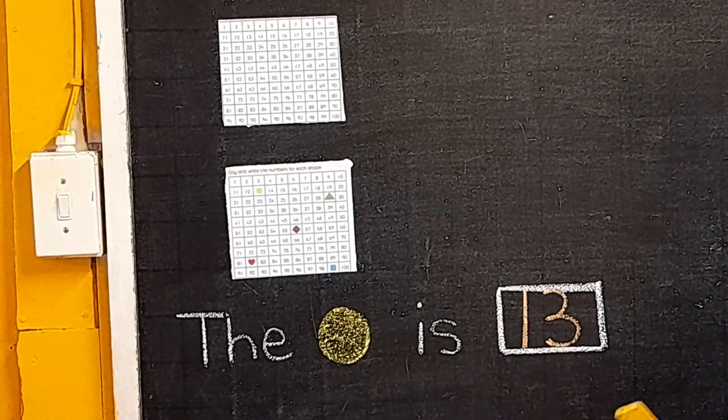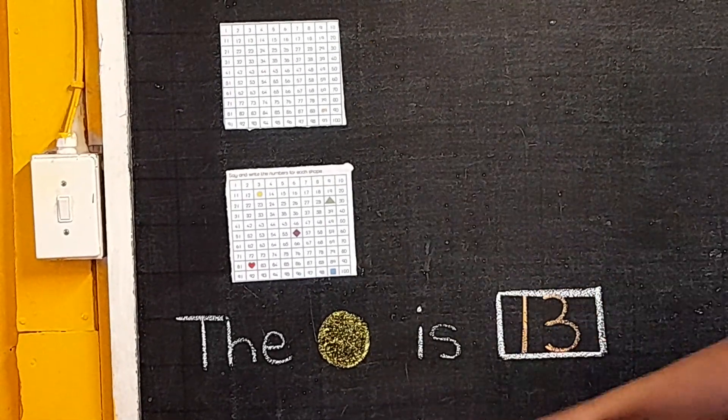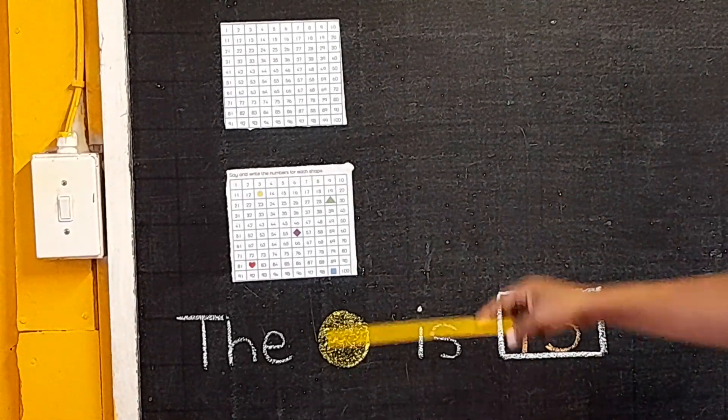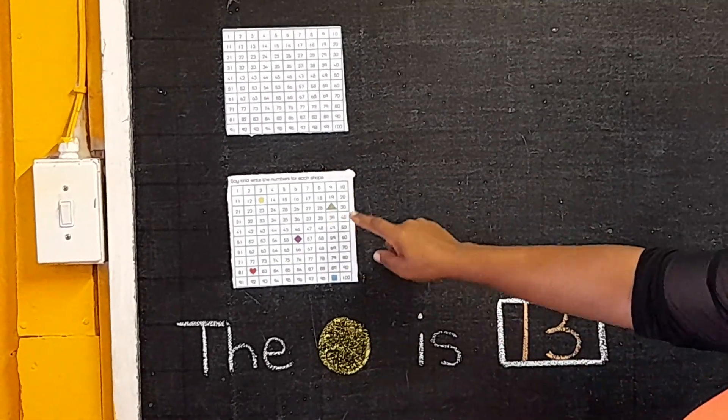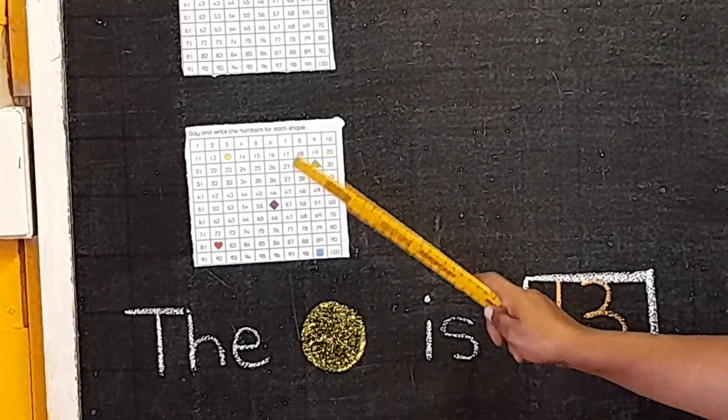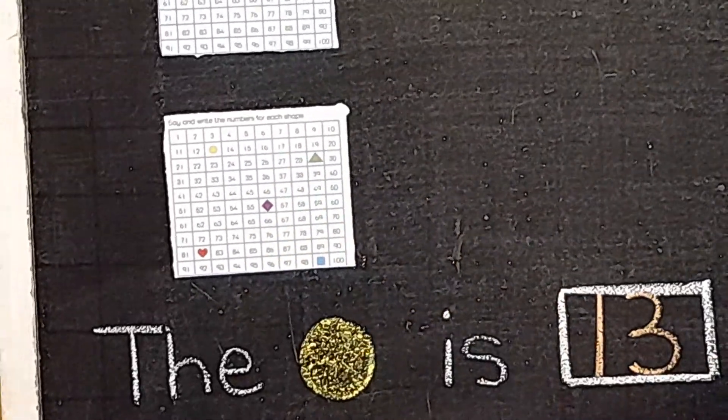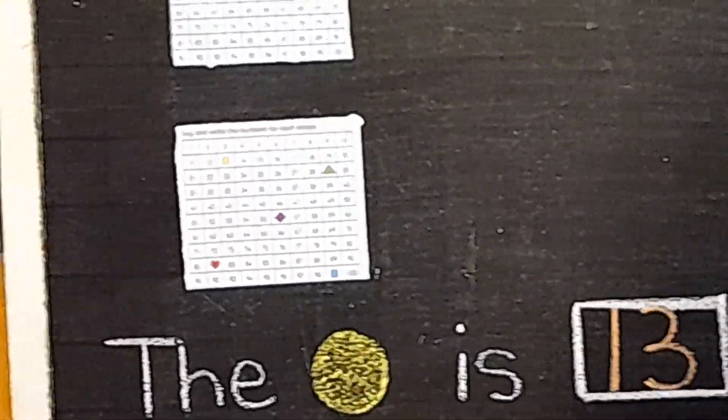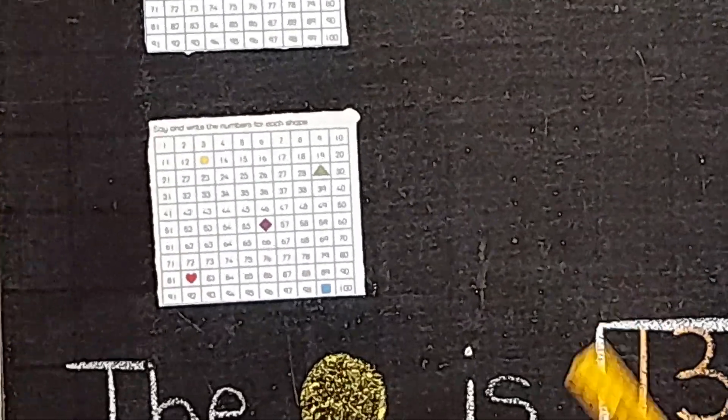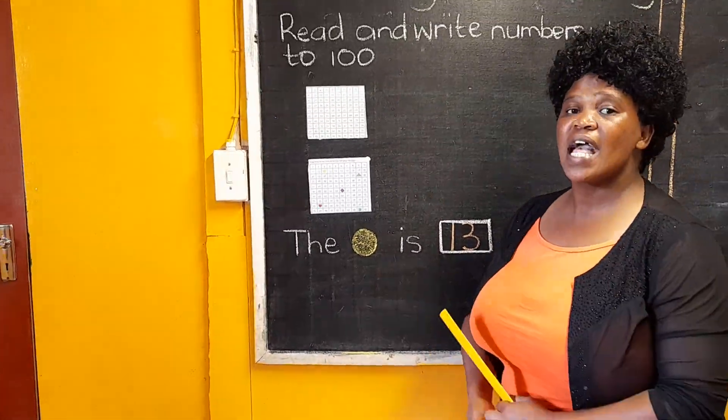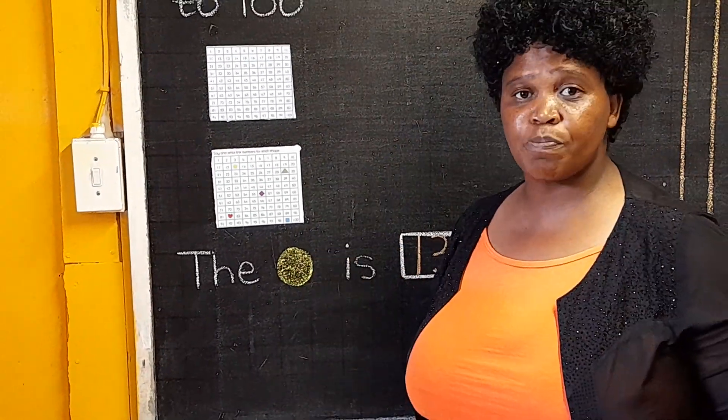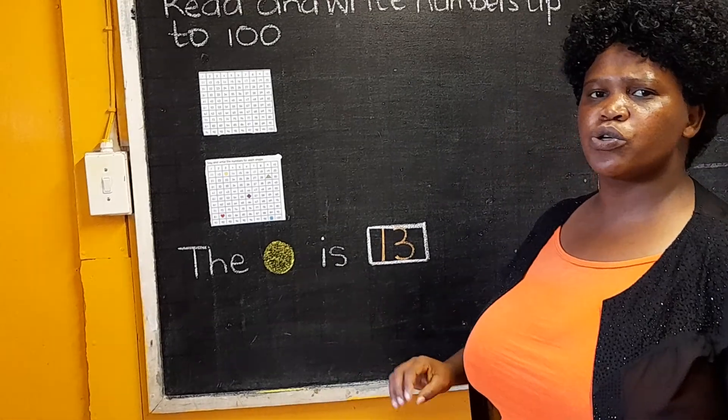I think at this point as you play around counting the numbers from one up to 100, you'll be able to find the missing numbers and fill them. The teacher is going to send the work to you which your parents are going to collect from the school and you're going to complete the work. On the next page there you're also going to complete the work given there by filling in the missing numbers.